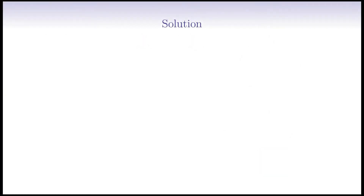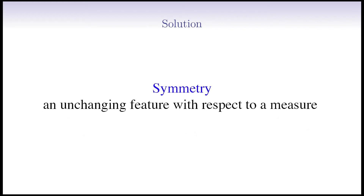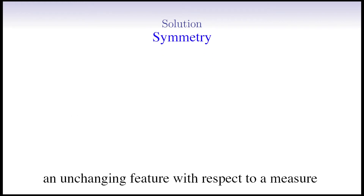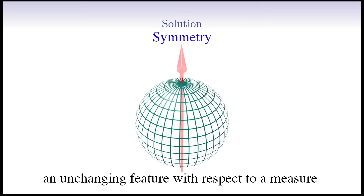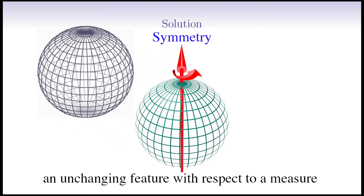First of all, we need to understand what symmetry means in physics and how we can identify it. Generally speaking, symmetry is an unchanging feature in something with respect to a measure. For example, in mathematics, we say that a sphere has symmetry over the azimuthal angle. This means that a sphere remains unchanged by the rotation or spinning about any diametrical axis that passes through the center of the sphere. So a sphere is a symmetric geometrical object with respect to rotation over its diametrical axis.